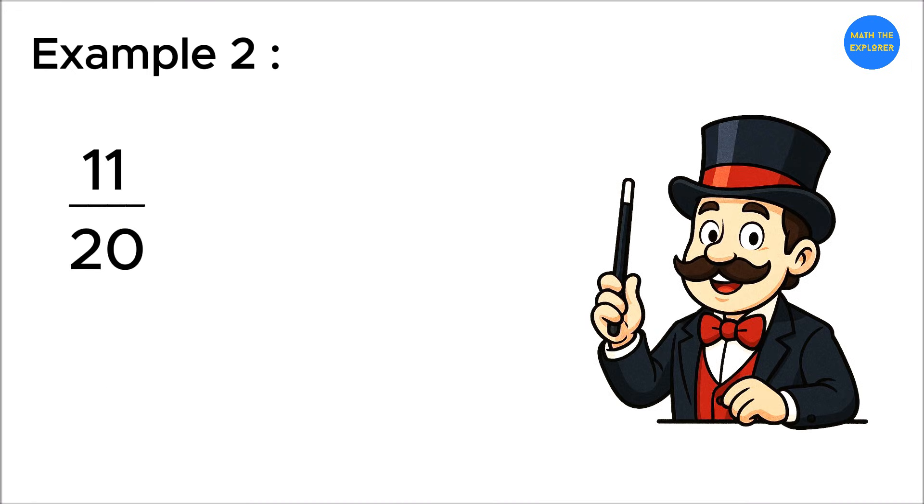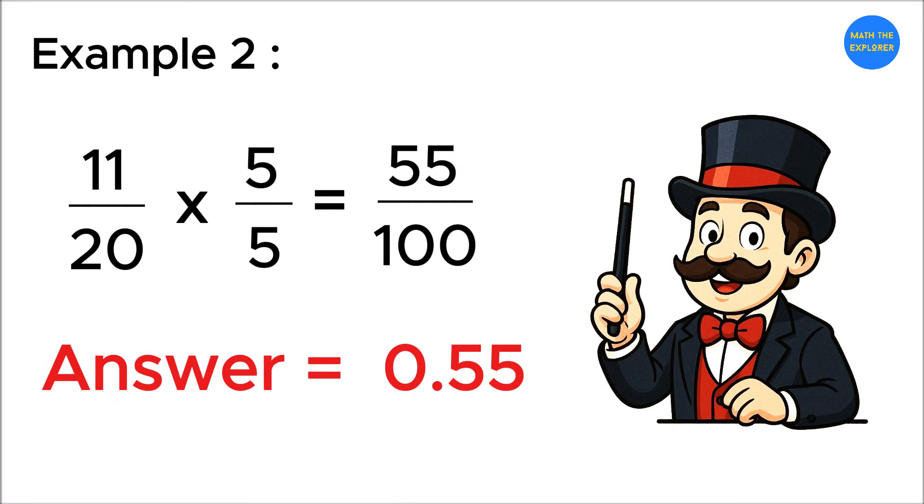Next, eleven over twenty. An easy trick here is to make the denominator one hundred. Multiply top and bottom by five. We get fifty-five over one hundred. And fifty-five over one hundred is simply zero point five five. Quick and easy.